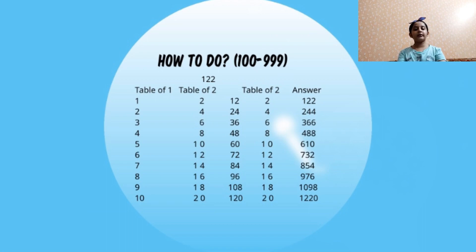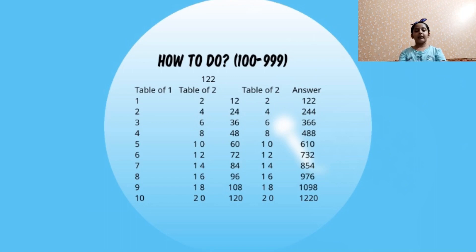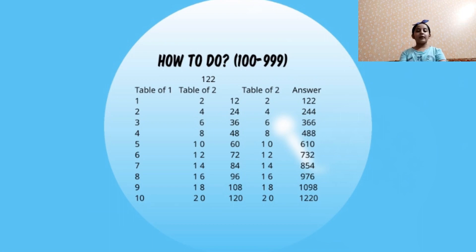The fourth step is to write the table of 1 because it is the first digit over here. Now the fifth step is to simplify. 108 plus 1 is 109 and then this 8. 120 plus 2 is 122 and then this 0. So see, we have created the table of 122. In this way, you can make the tables for 100 to 999.